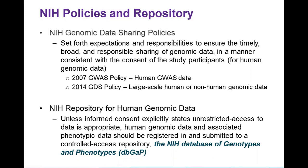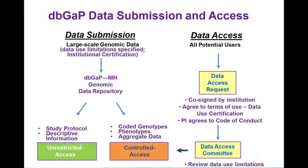As I mentioned, we've had two data sharing policies reflecting this: the 2007 GWAS policy and also the 2014 genomic data sharing policy. For human genomic data generated as a result of being funded under these policies, unless the informed consent explicitly indicates that the data should be shared in an unrestricted or public access repository, the expectation is that the human genomic data and the associated phenotypic data should be registered, deposited, and accessed through the NIH database of genotypes and phenotypes, DbGAP.